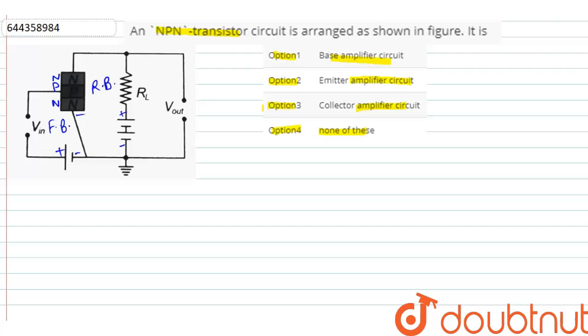So here we can clearly see that this is emitter configuration. So by seeing all this we can clearly see that this is emitter, this is base and this is collector.